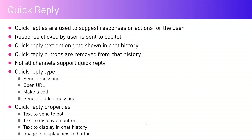There are different quick reply types. If you select a type of Send a Message, you can send a text message as part of the response, which will be received by the copilot. You can also initiate an action to open a URL, or initiate an action to make a telephone call, provided you put the number in a specific format.